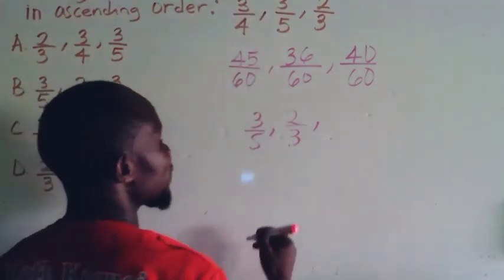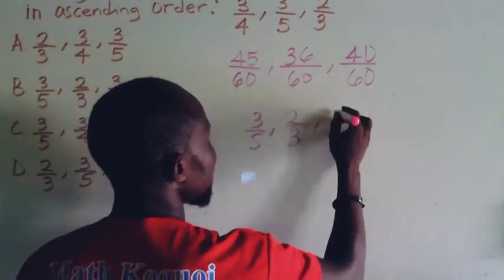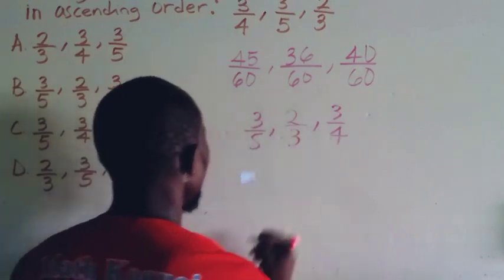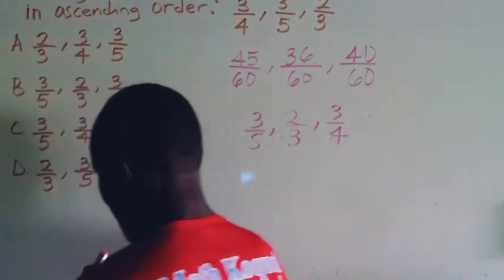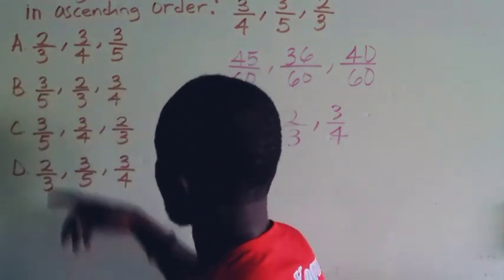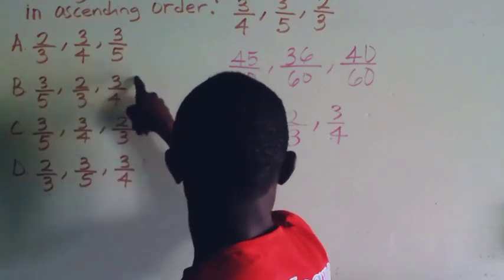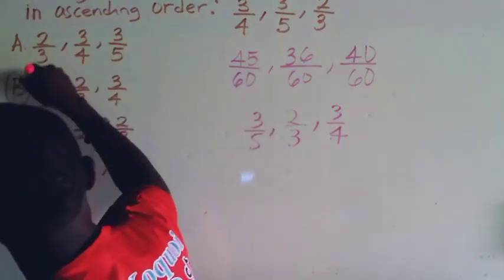The largest one is 45 over 60, which is 3/4. So looking at our options, we're looking for 3/5, 2/3, 3/4 in that order. Our answer is option C.